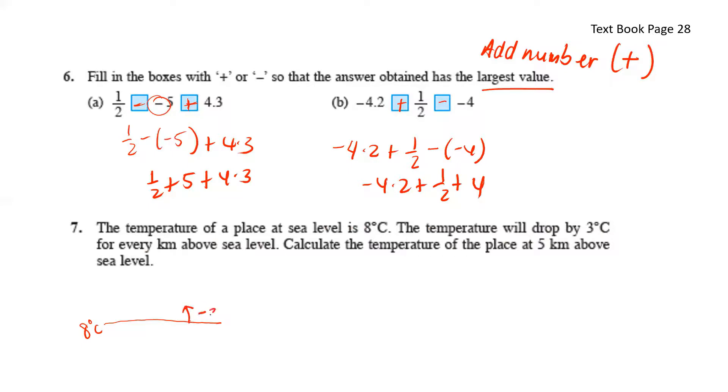For every 1 kilometer rise, it will give us negative 3 degrees because it's dropping by 3 degrees Celsius. So for 5 kilometers, what's the temperature like? 1 kilometer is negative 3 degrees Celsius. 5 kilometers gives us negative 3 degrees Celsius times 5, which is negative 15 degrees Celsius.